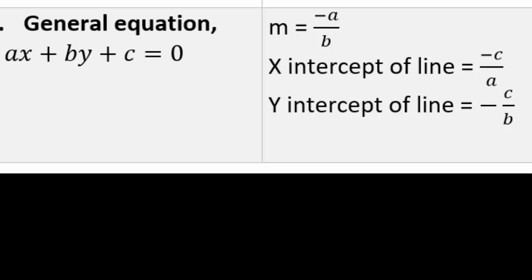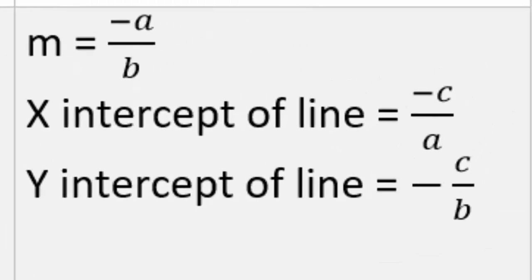The x-intercept of a line gives the point where the line cuts the x-axis. To find it, substitute y = 0 in the equation, or use the formula: x-intercept = -c/a, that is, minus the constant upon coefficient of x. Similarly, the y-intercept gives the point where the line cuts the y-axis. To find it, substitute x = 0 in the equation, or use the formula: y-intercept = -c/b, that is, minus the constant upon coefficient of y.